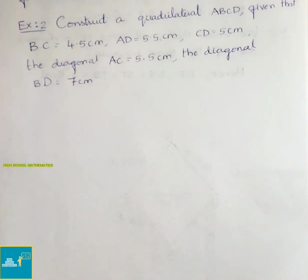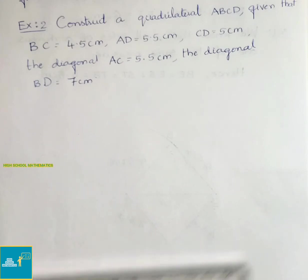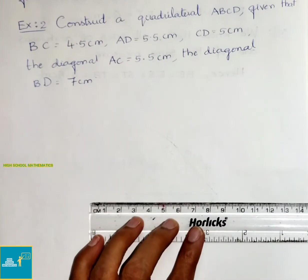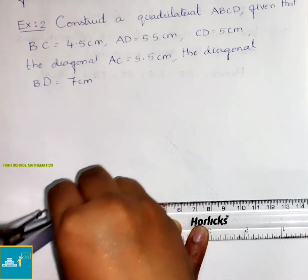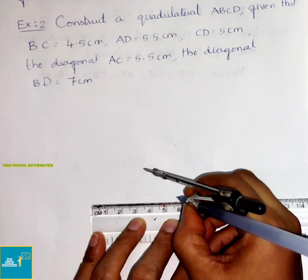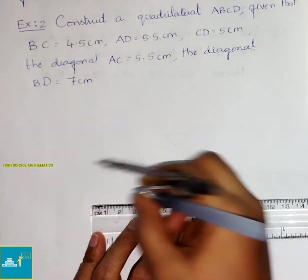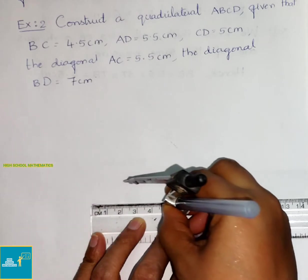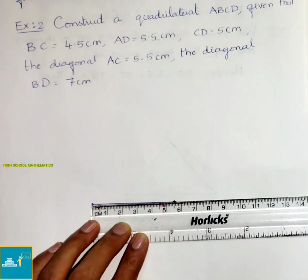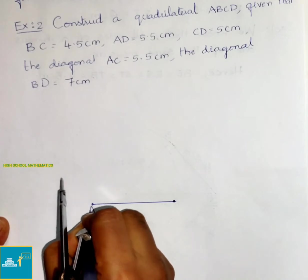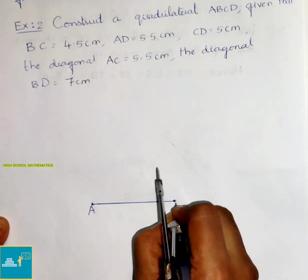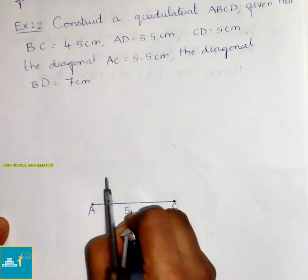First, let us draw the diagonal AC equals 5.5 cm. Let us mark 5.5 and join them. Now mark them as AC and write down the length 5.5 cm.